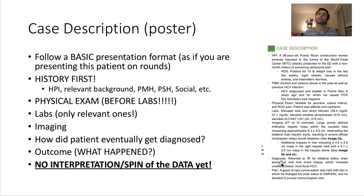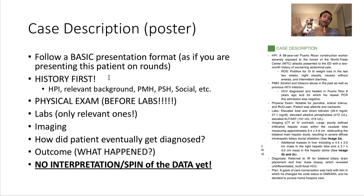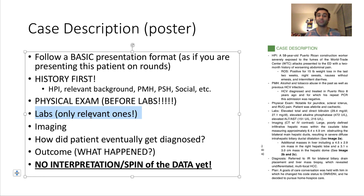Next up: case description. If you've ever seen residents present patients in the hospital, you want to do the exact same thing. Start by talking about the patient's history — the HPI — but keep it focused. I don't want everything; I want what is the problem, what is the relevant past medical history, what is the relevant social history. For example, if a patient had hepatocellular carcinoma, it would be important to know if he had a drinking history.